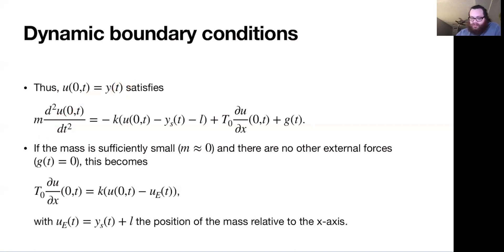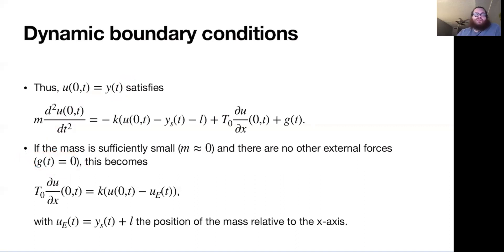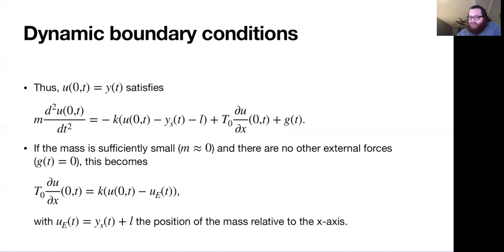Another assumption we're going to look at is this black box for any other forces like gravity — we're going to ignore that, assuming there are no other forces. So the weight of the string and gravity don't have an effect. What we're left with is minus K times this whole thing plus T naught times this derivative, all equal to zero. Move this to the other side and the sign flips.